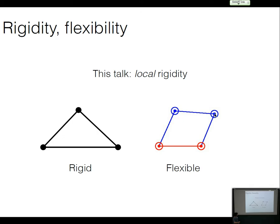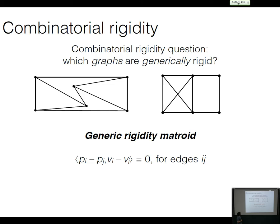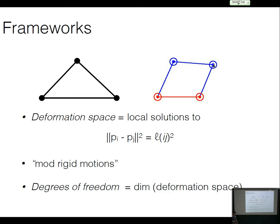This is a very good algebraic problem where you've got these length equations and then you have some dimension of the solution space. If that dimension is zero — once you've modded out the trivial motions — it's rigid, otherwise it's flexible. And because this setup is so nice, that dimension is really a well-defined thing, well-defined generically.